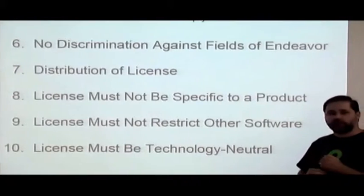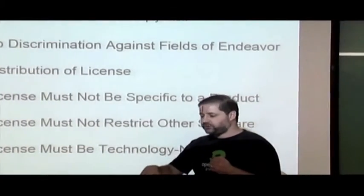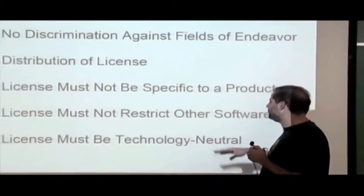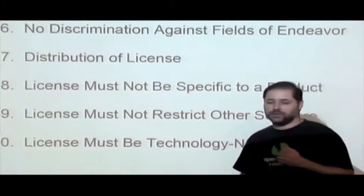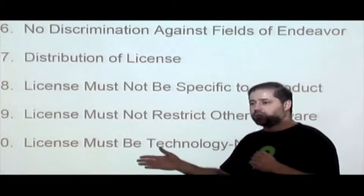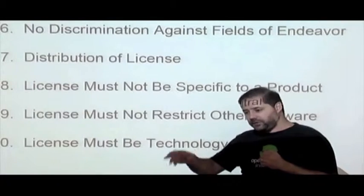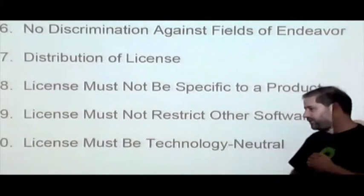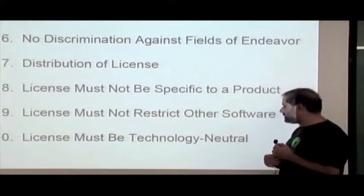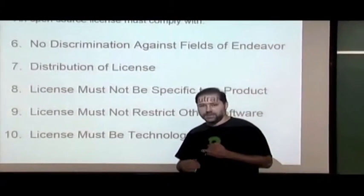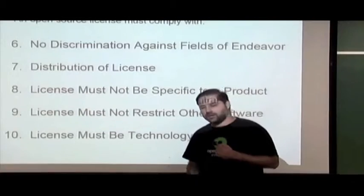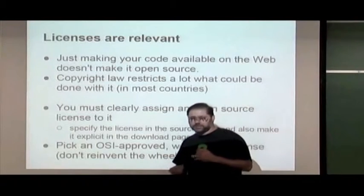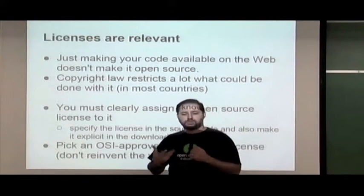The license must not be specific to a product — if it's open source software, you can use it anywhere. The license must not restrict other software; you can't say 'this software is open source only if you don't bundle it with this other software.' And it must be technology-neutral — you can't require the use of a particular technology to have access to the software.